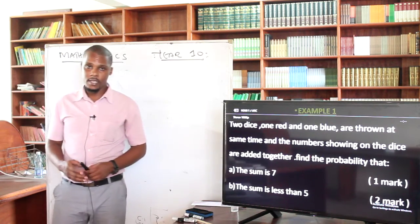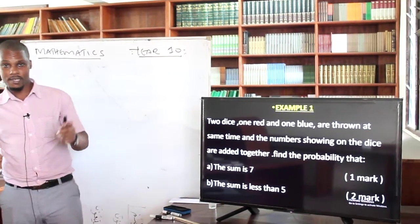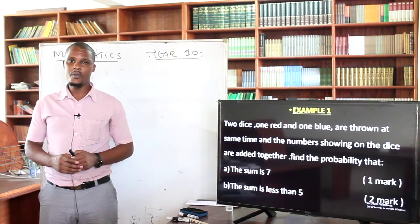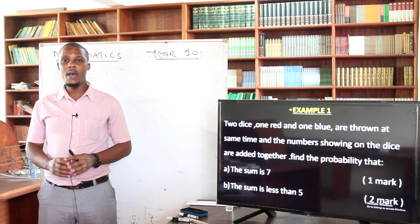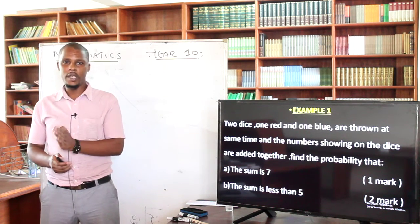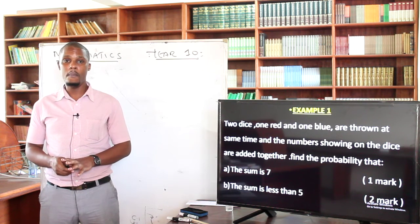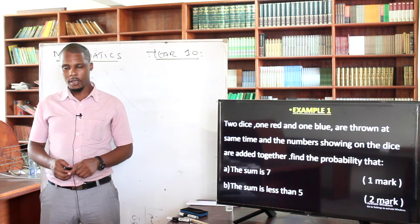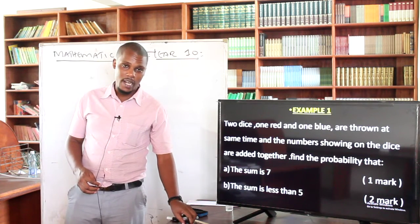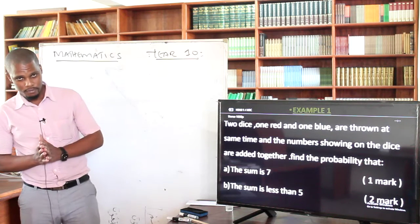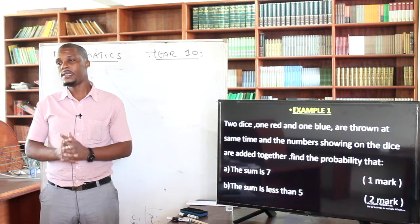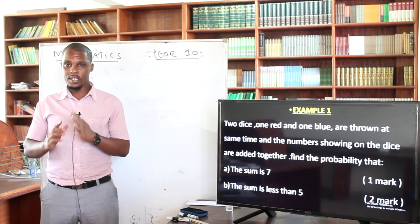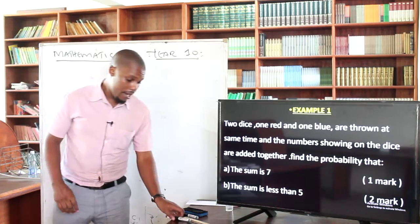So let's do example number one. In example number one, you have two dice — one is red in colour and the other one is blue in colour. They are thrown at the same time, and then the numbers showing on each die are added together. You are then required to find the probability that: one, the sum is seven; two, the sum is less than five. So how many possible outcomes are you going to have when you throw the two dice together at once? To be able to see those outcomes, you need to draw a table that will tell you the number of possible outcomes.